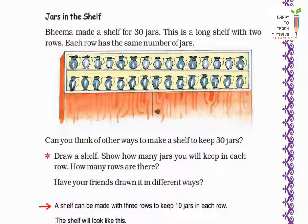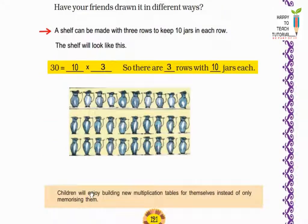Now can you think of other ways to make a shelf to keep 30 jars? Yes, there are so many ways. You can make a shelf with 3 rows with 10 jars in each row. That means 10 into 3 is equal to 30 jars we can keep in the shelf. Or 5 rows with 6 jars each. That means 6 into 5 is equal to 30 jars are there.